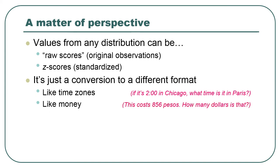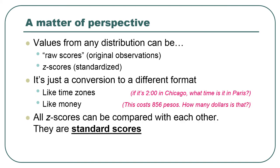It's like time zones, like money — there are always two different number scales: the raw score scale and the z-score scale. Any number on the z-score scale can be turned into a raw score by applying one z-score formula, and any raw score can be turned into a z-score using the other formula. We like converting to z-scores because all z-scores can be compared with each other — that's why we call them standard scores. Everything can be compared if you convert to z-scores first.